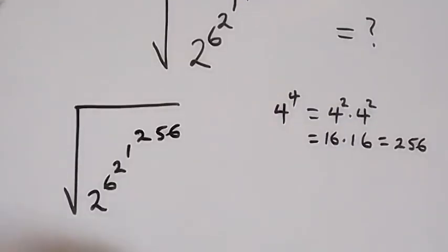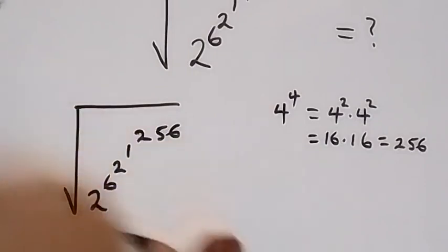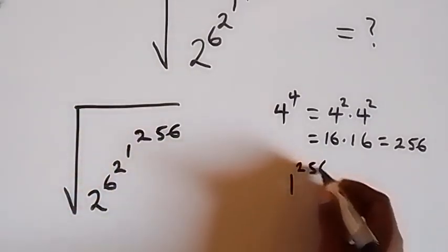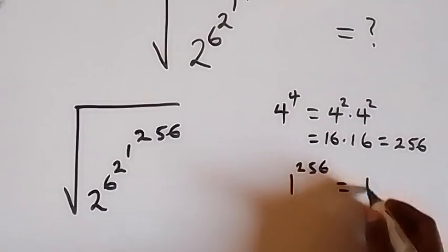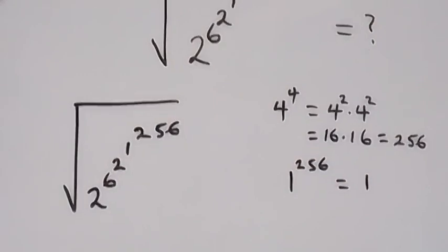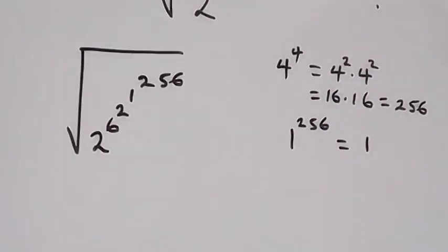Next, we have 1 raised to power 256, and 1 raised to power 256, with it being 1. So when we keep on multiplying itself, we still have 1.